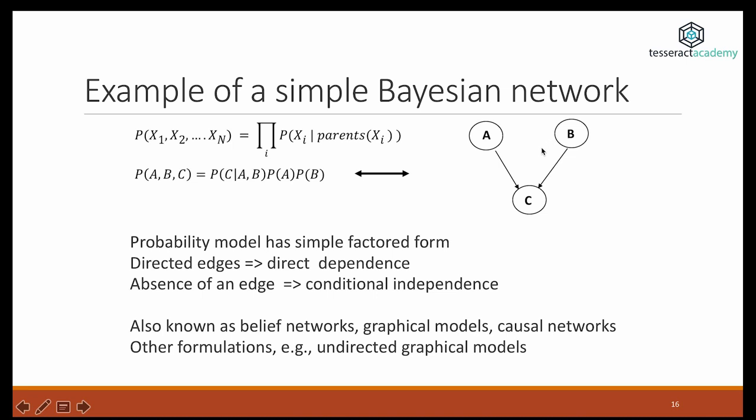You can see that this network here is equivalent to this here. For those of you who can understand the language of probabilities, this means the probability of A, B, and C is equal to the probability of C given A and B times the probability of A times the probability of B.